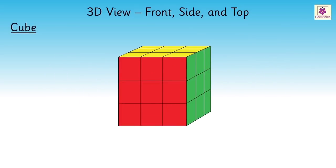This is a Rubik's Cube. This cube has length, breadth and height. It has 3 dimensions. It can be viewed from the front, side and top.